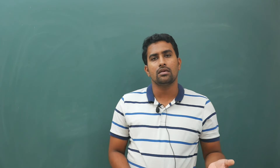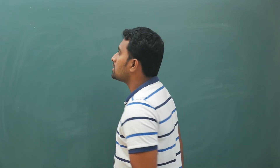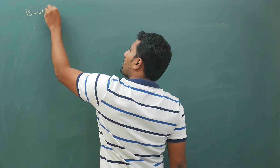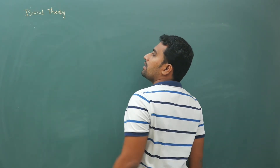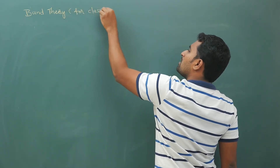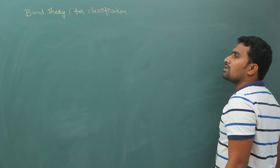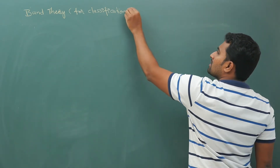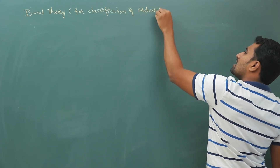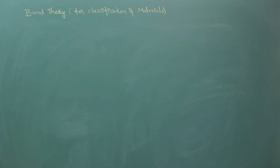Now, on what basis are we dividing these materials based on electrical properties? Which material acts as insulator, which as conductor, which as semiconductor — it is based on band theory. Band theory is what I am going to explain — band theory for classification of materials. Most people will not give a full introduction; they will simply explain the classification directly.